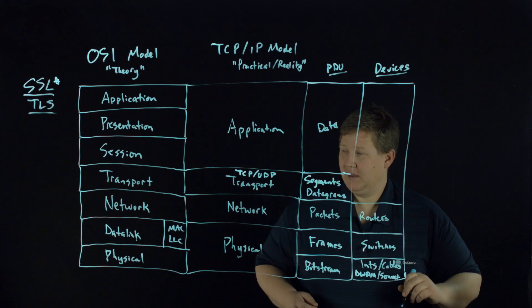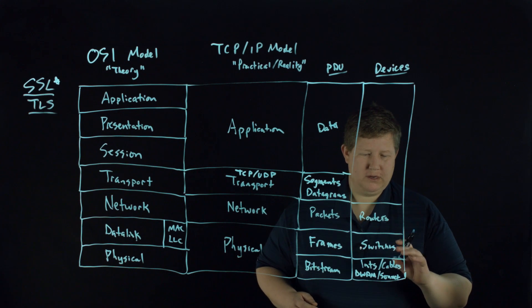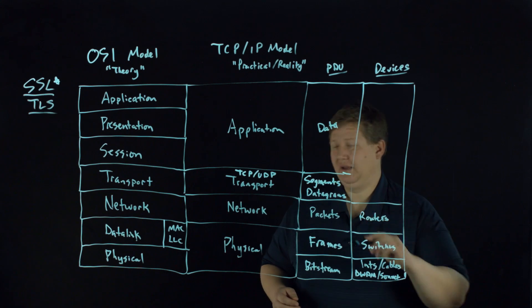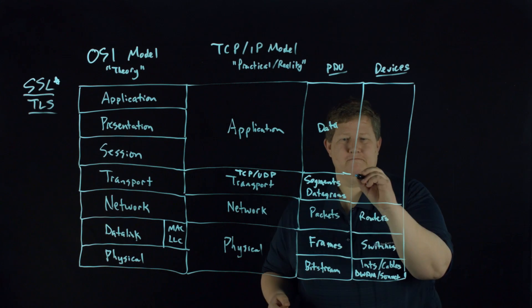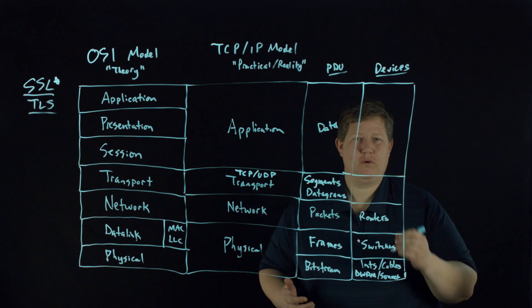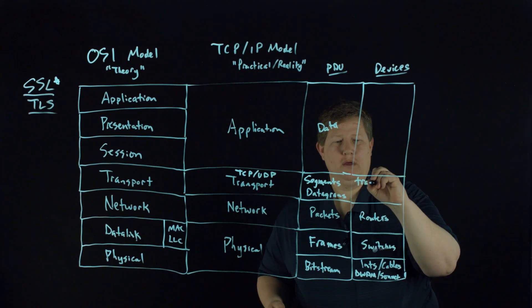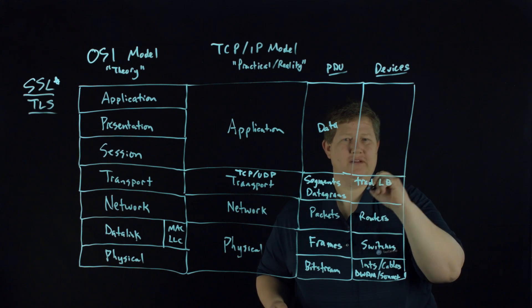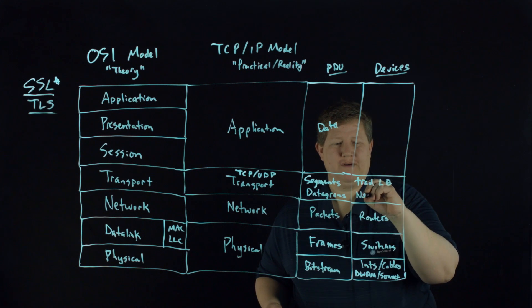And then you have routers here. If you're looking at your collision domains, they're handled here at the switches. Your broadcast domains are handled here at the network layer. And then at layer four, this is where you have traditional load balancing, your network firewalls.